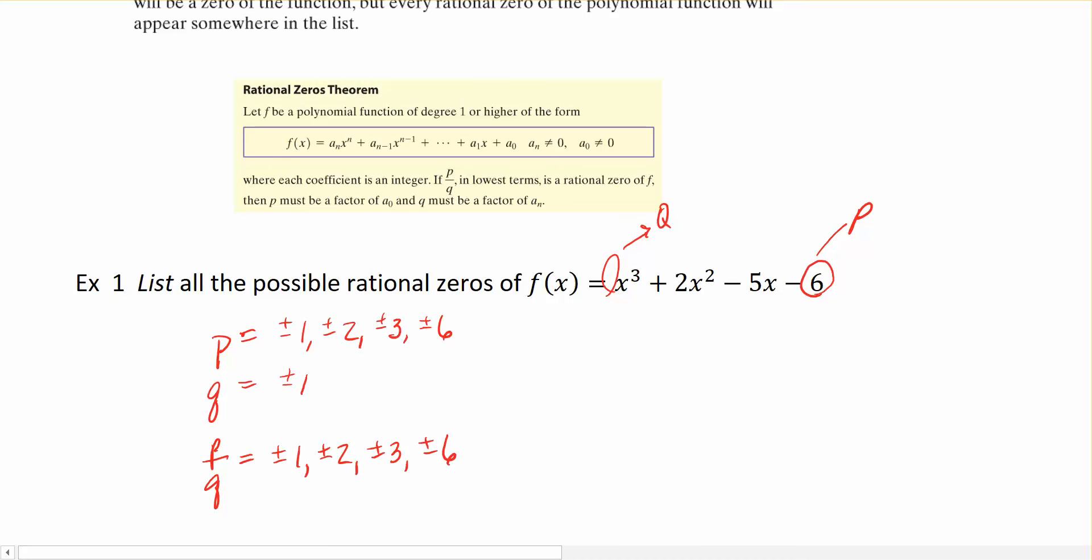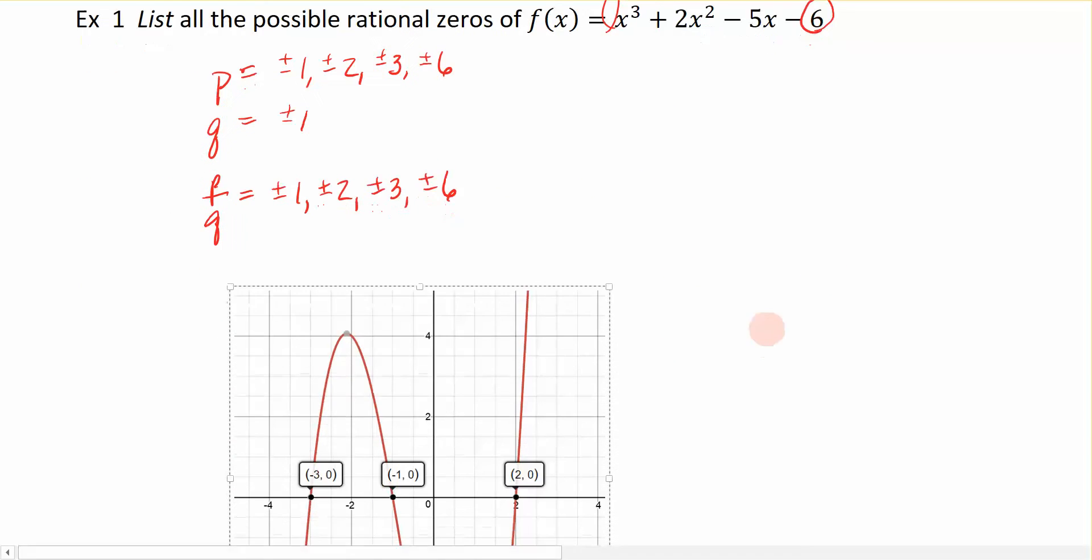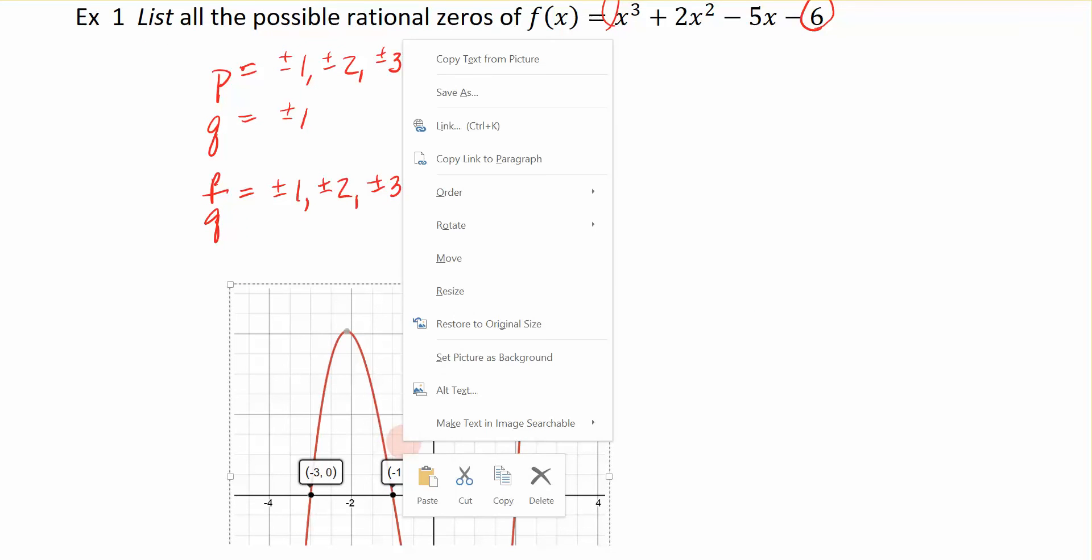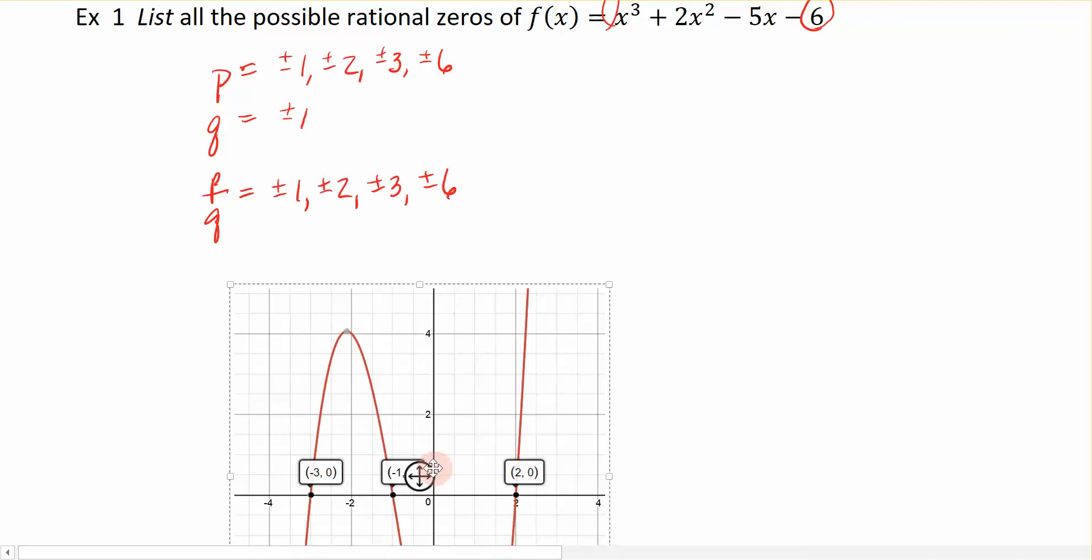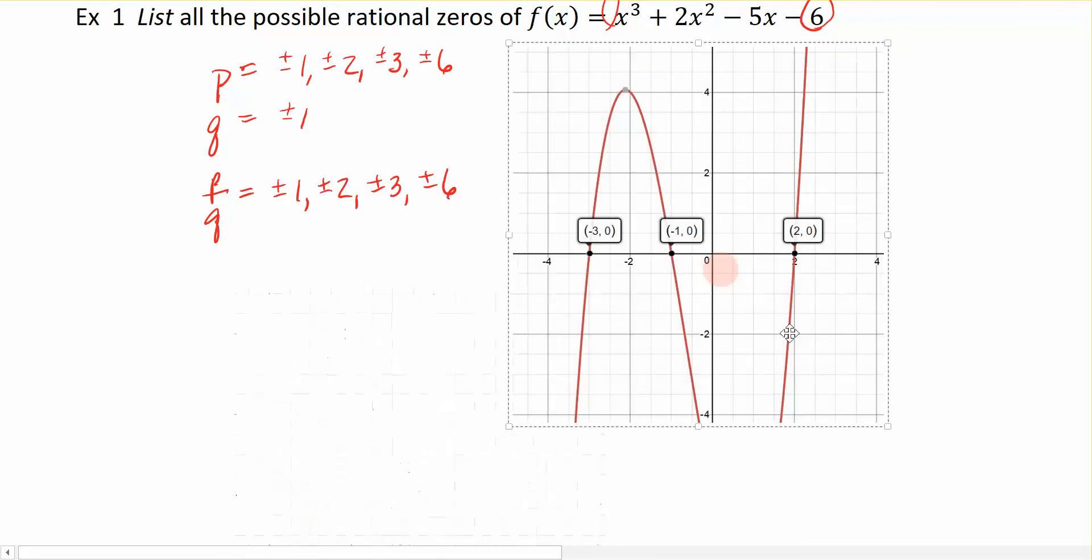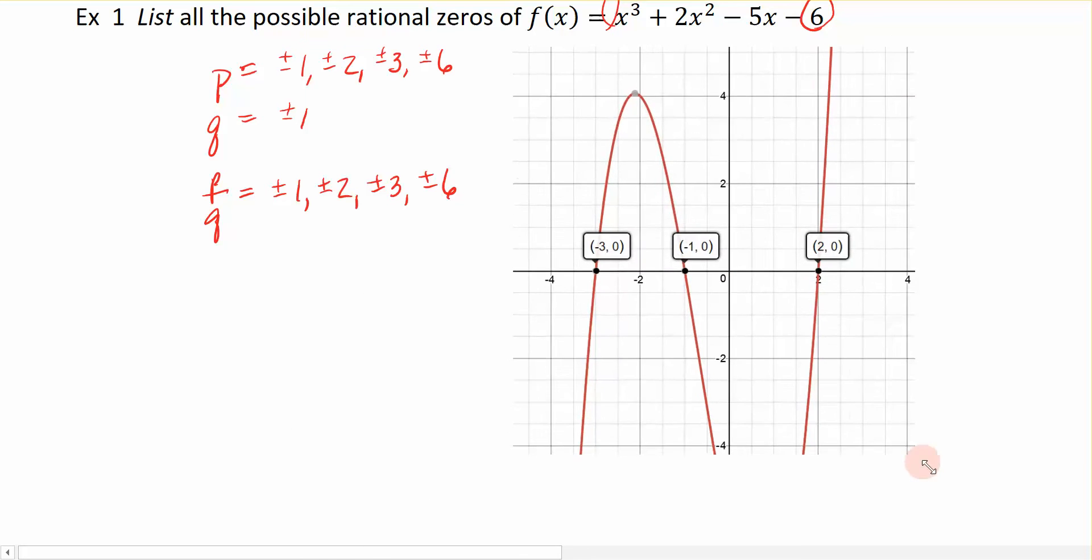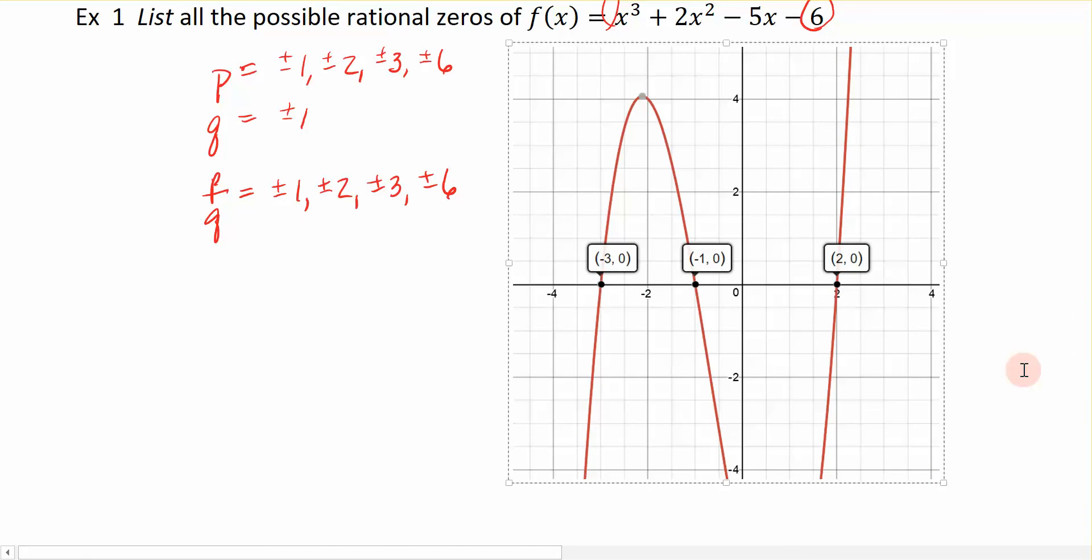And, in fact, if I were to pull up the graph of that function, let me make this so that you can see it. If I were to pull up the graph of that function, you can see here that I have zeros occurring at negative 3, negative 1, and positive 2. And, those are part of this list, which is just a list of possible rational zeros for my function.